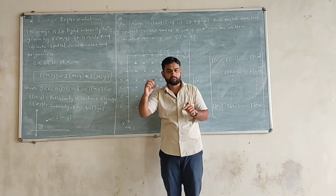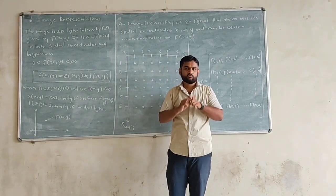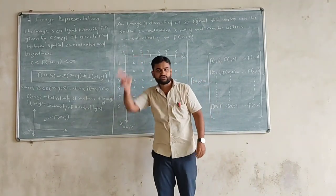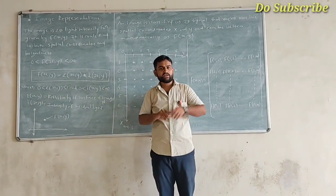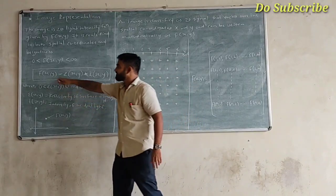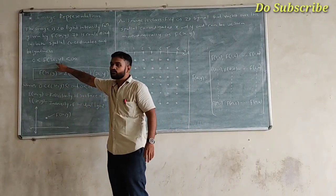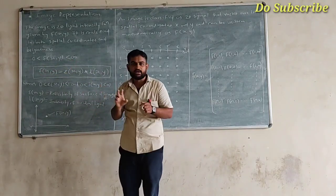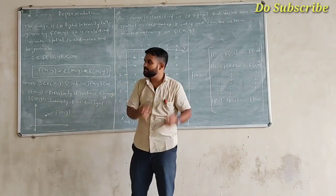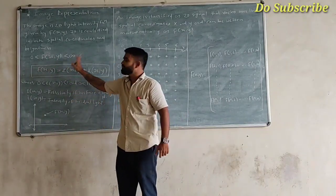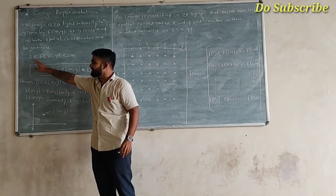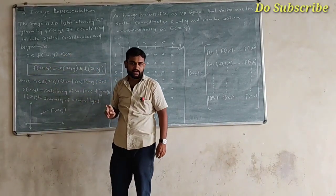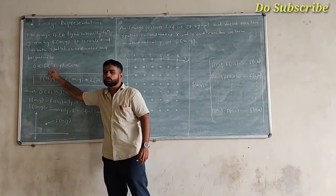If we think about the image, it has a two-dimensional view. The meaning of two-dimensional view is that we have coordinates — x coordinate and y coordinate. So we can mathematically represent that image as f(x, y). This image value should lie between 0 to infinity, meaning the intensities of that pixel lie between 0 and infinity. Mathematically we present the equation as: 0 ≤ f(x, y) ≤ ∞, so it needs to lie between 0 to infinity.